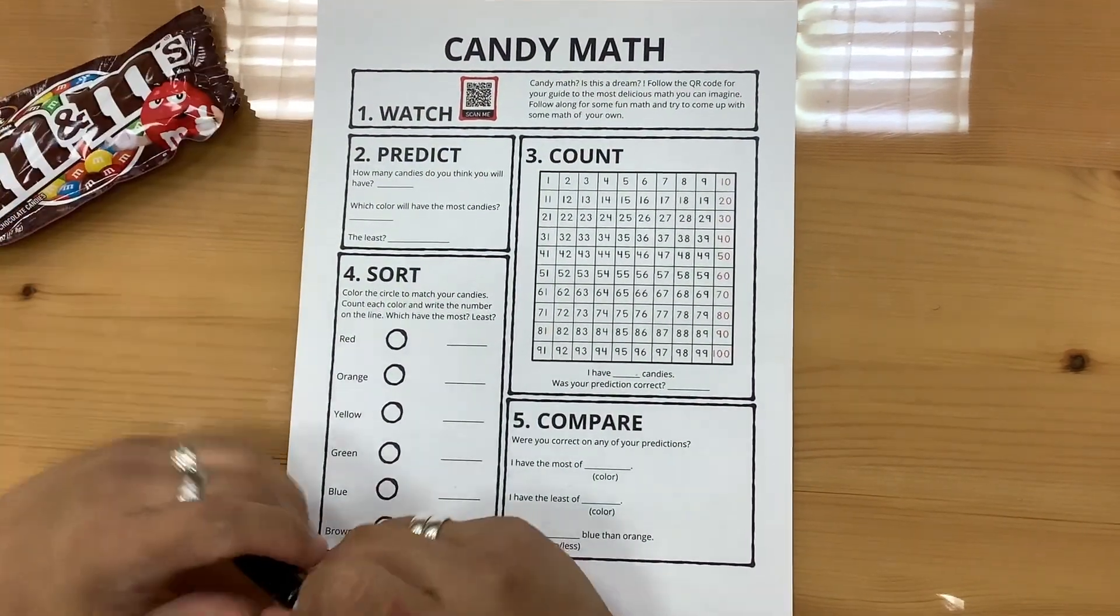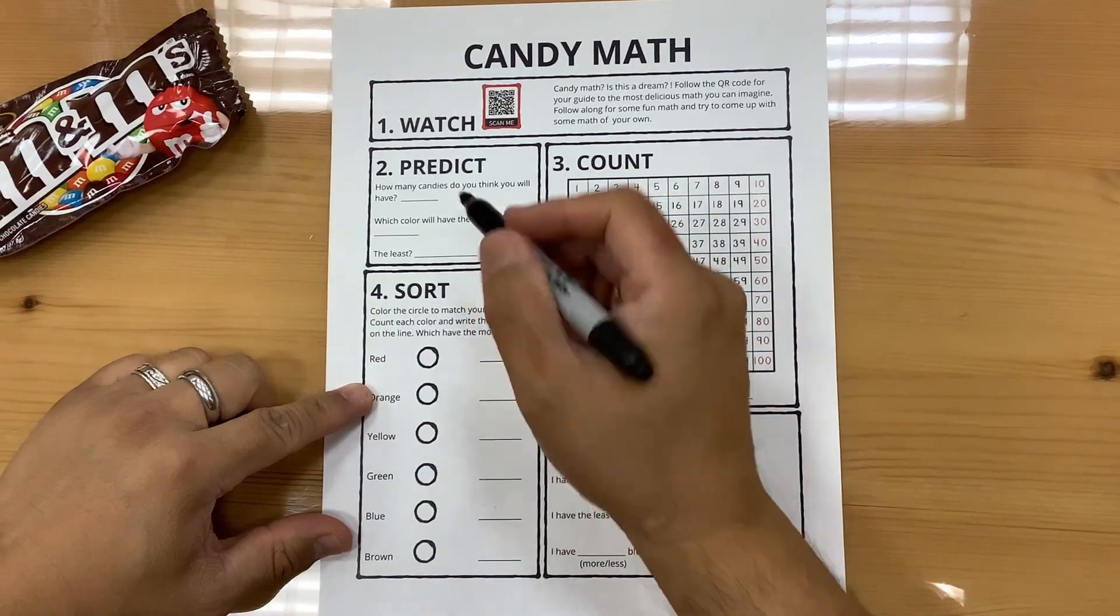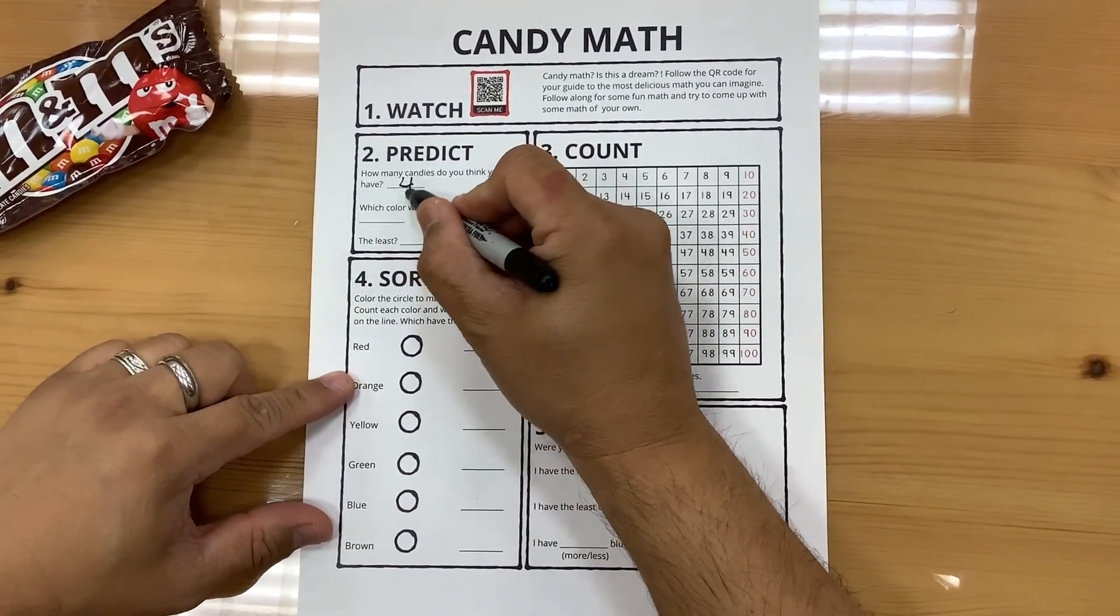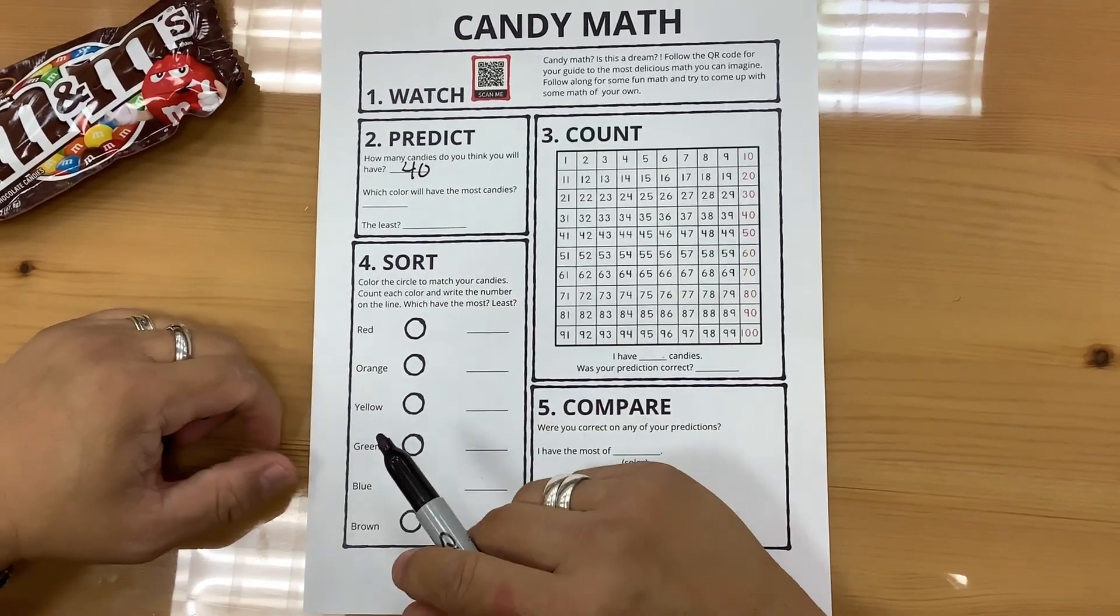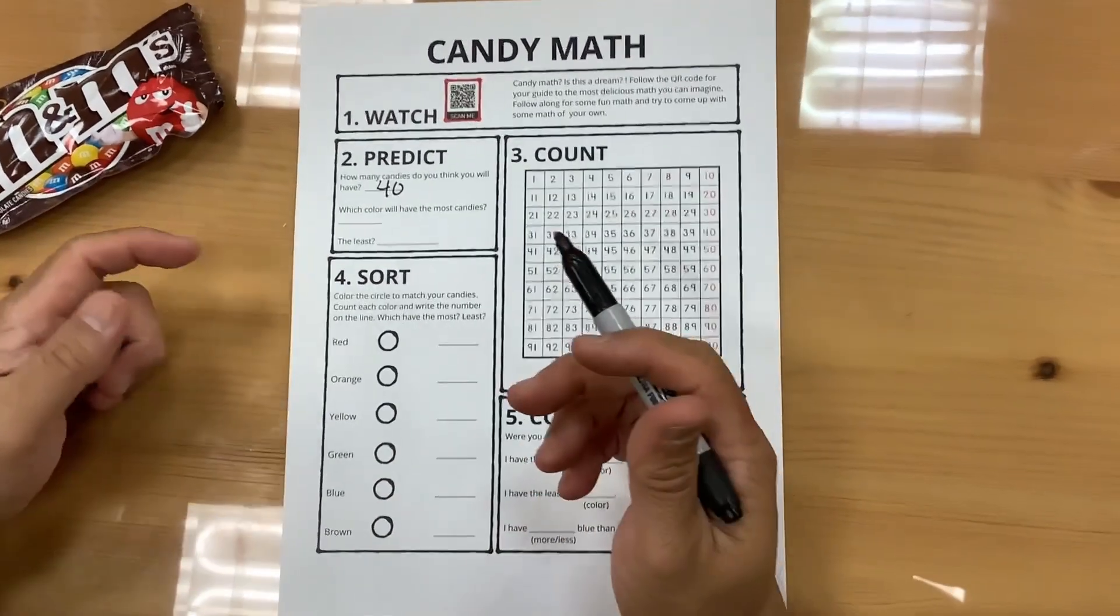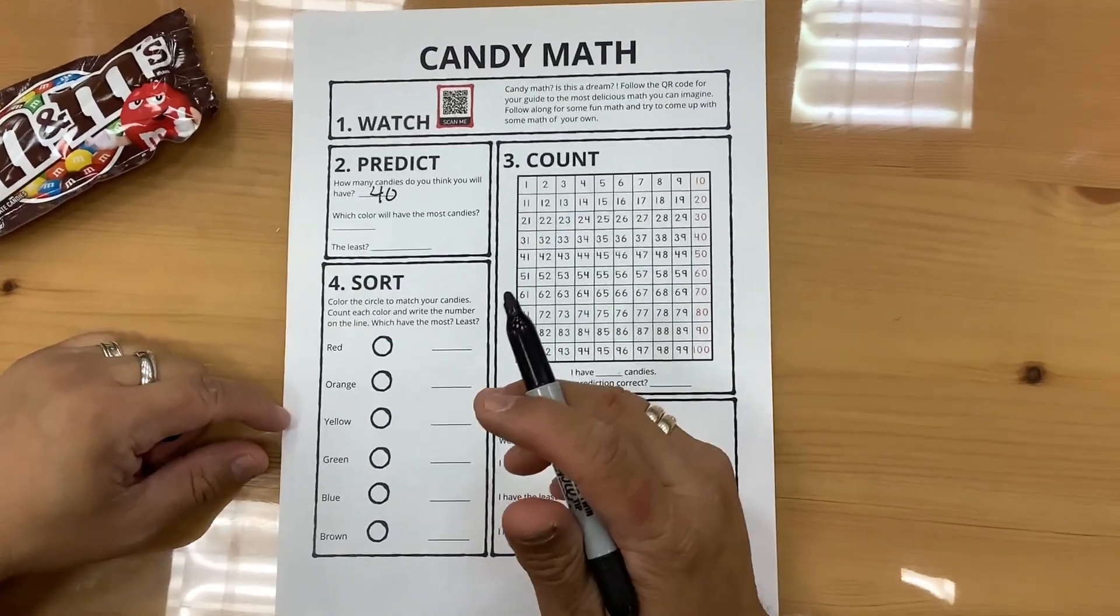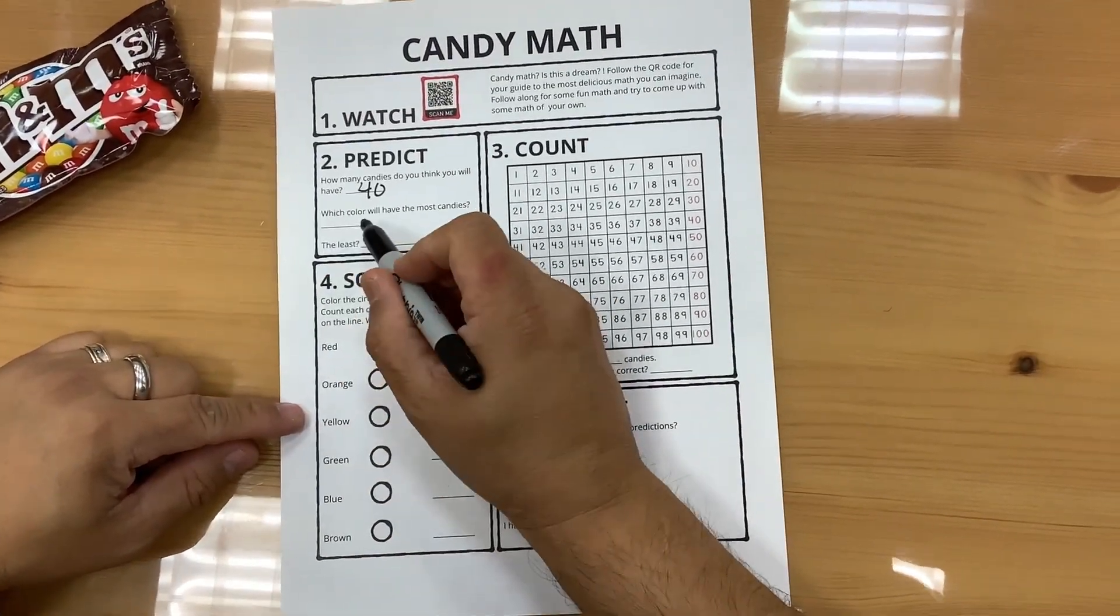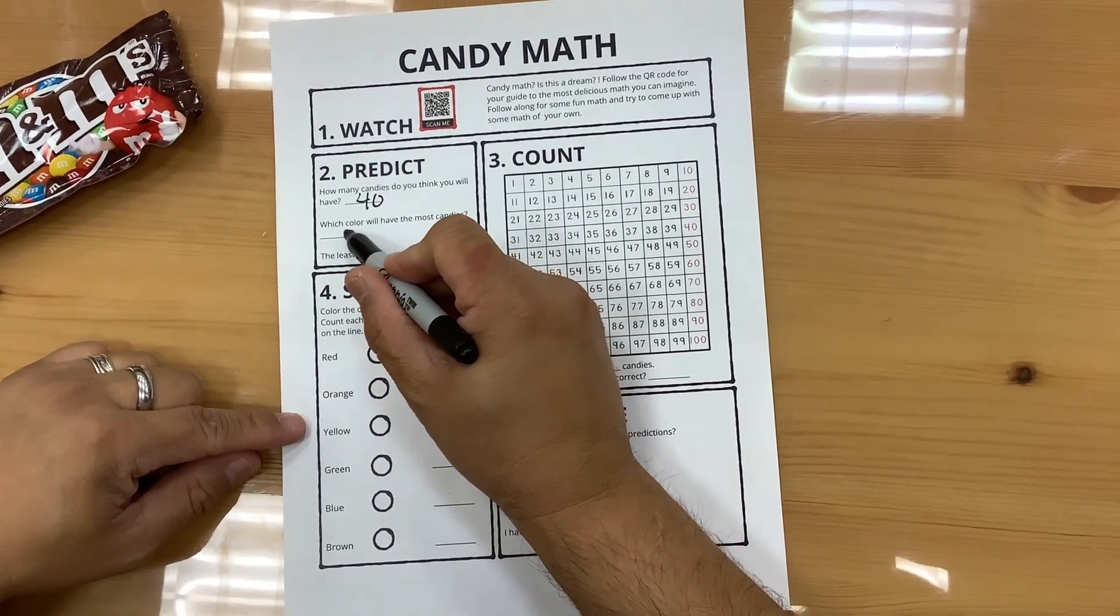With this bag of candy, I'm going to predict probably 40. I'll write down 40. Which color do I think have the most? What do you think? You can write down your choice. I'm going to pick blue.